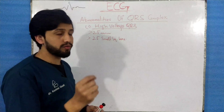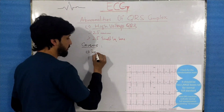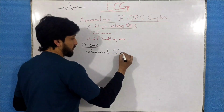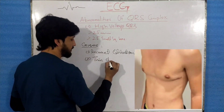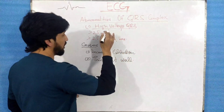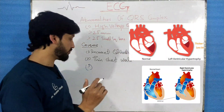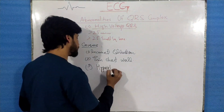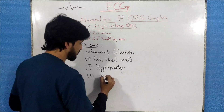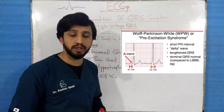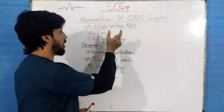What are the causes of this high voltage QRS complex? The causes involve: number one, incorrect calibration — when the calibration is incorrect you will see a high voltage QRS complex. A thin chest wall is another condition in which you will see the high voltage QRS complex. There can also be ventricular hypertrophy, which can be right or left ventricular hypertrophy, and this will also be a cause for high voltage QRS complex. Then comes WPW syndrome, a pre-excitation syndrome in which there will be a high voltage QRS complex seen on the ECG paper.